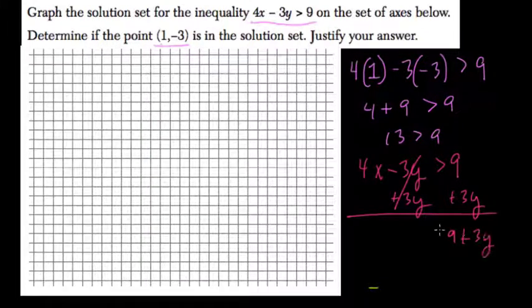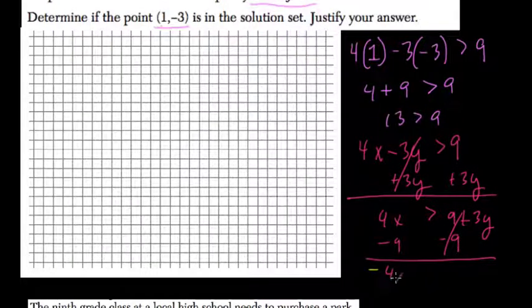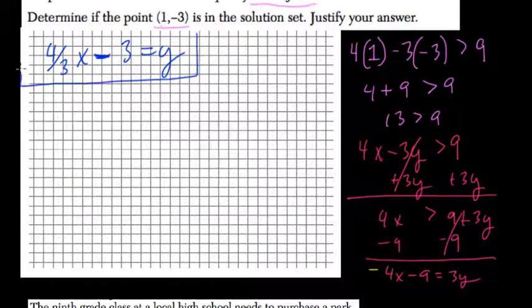9 plus 3y is less than 4x. And then I want to start isolating y to get it in the right format for me. These cancel out. 4x minus 9 equals 3y. But I don't want to deal with 3y. I want to know what y is. I divide everything by 3. And what that will do is it will set it up so it's 4 thirds x minus 3, because 9 divided by 3 is 3, equals y. And this is the equation for my line.